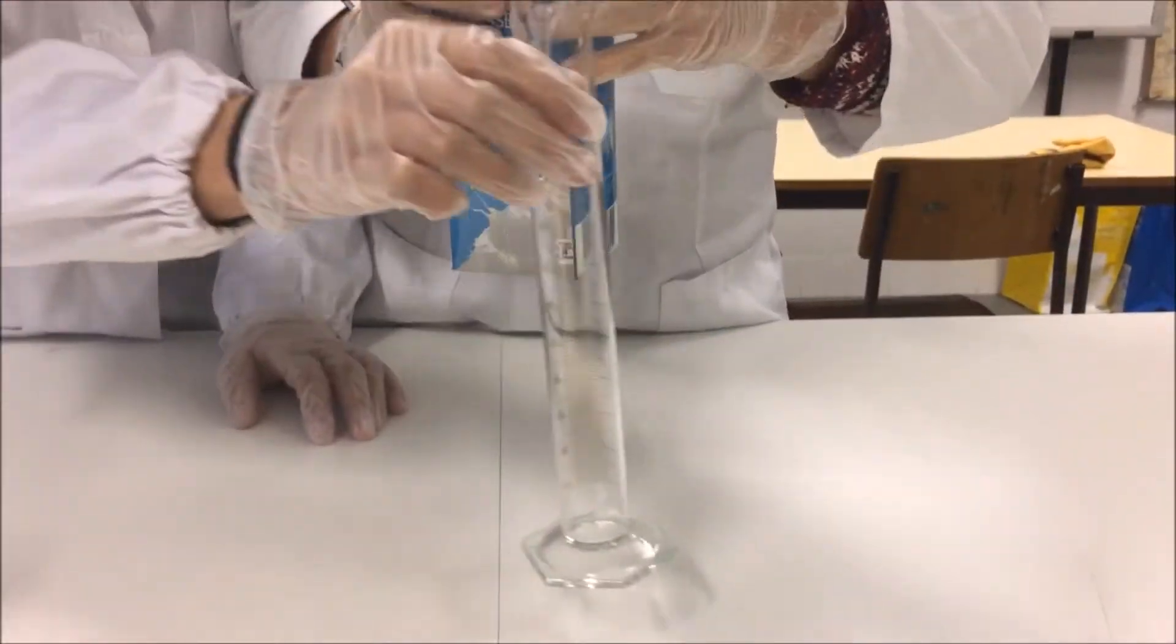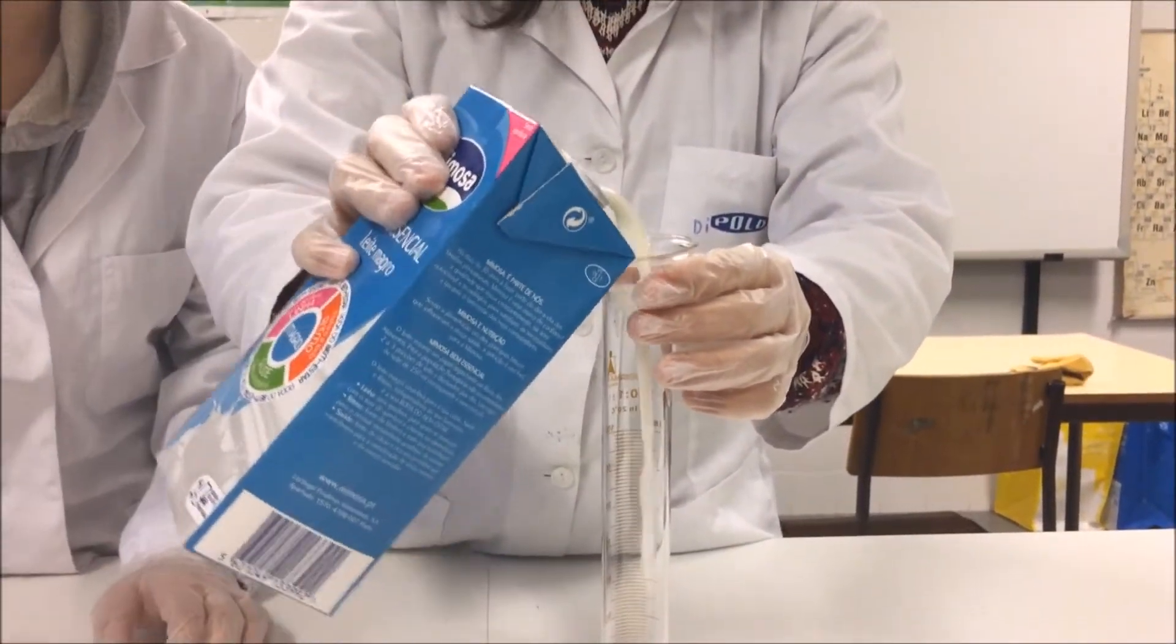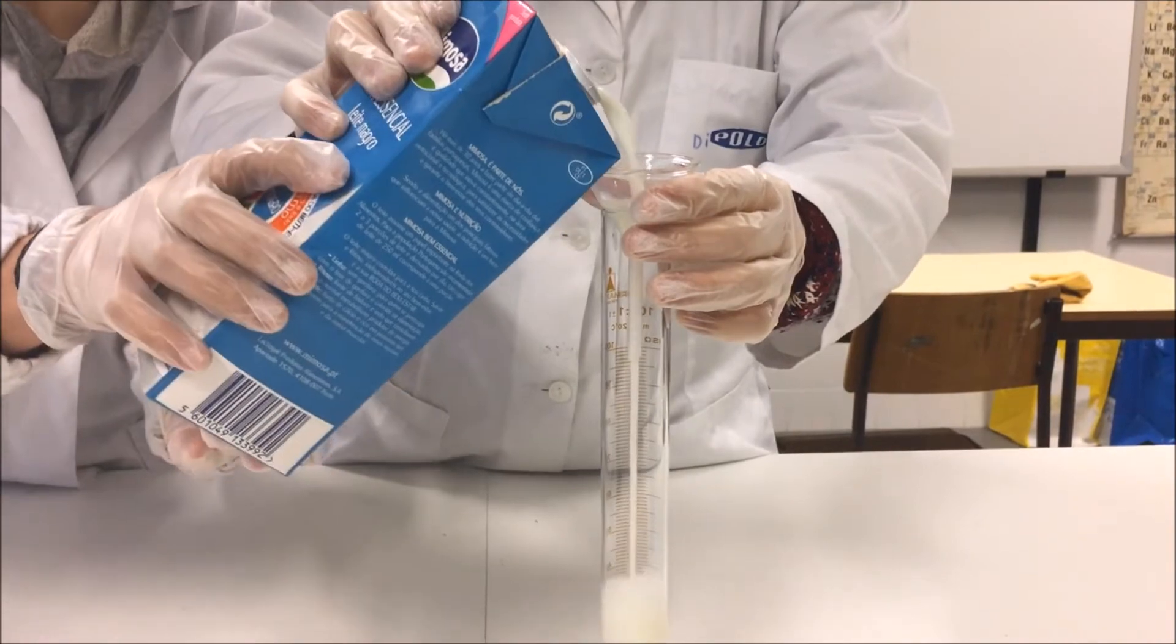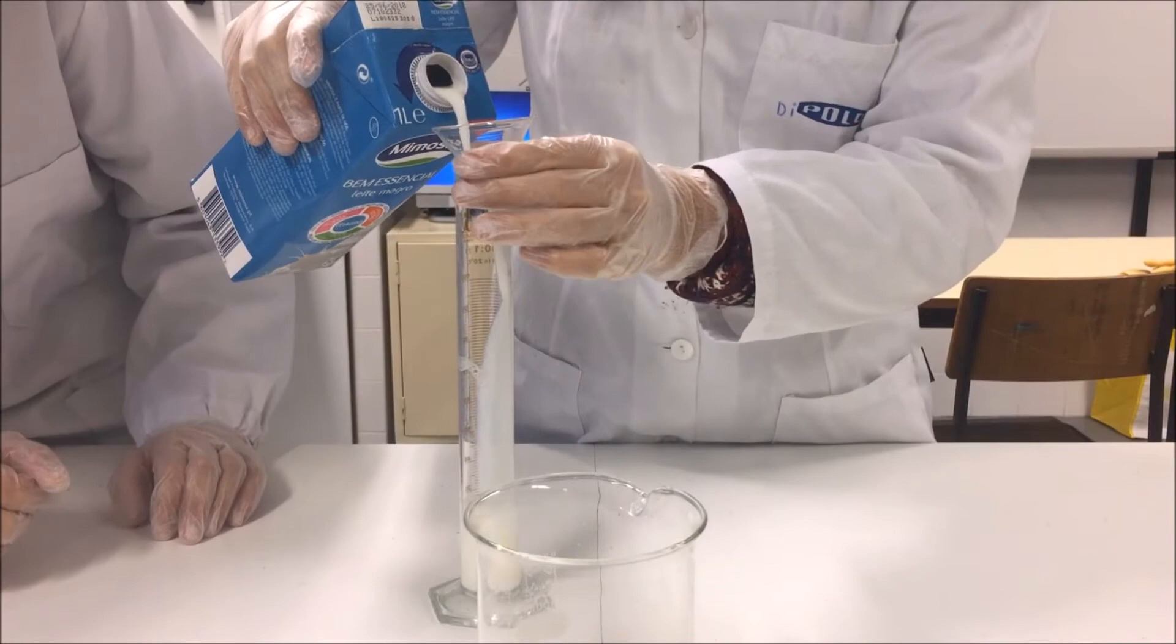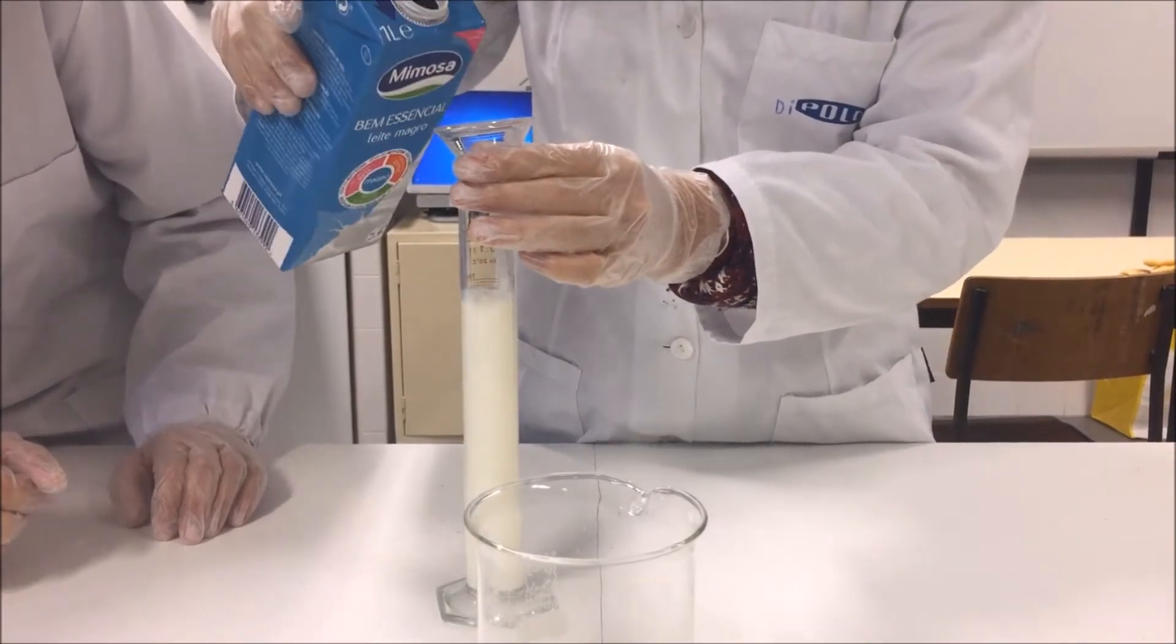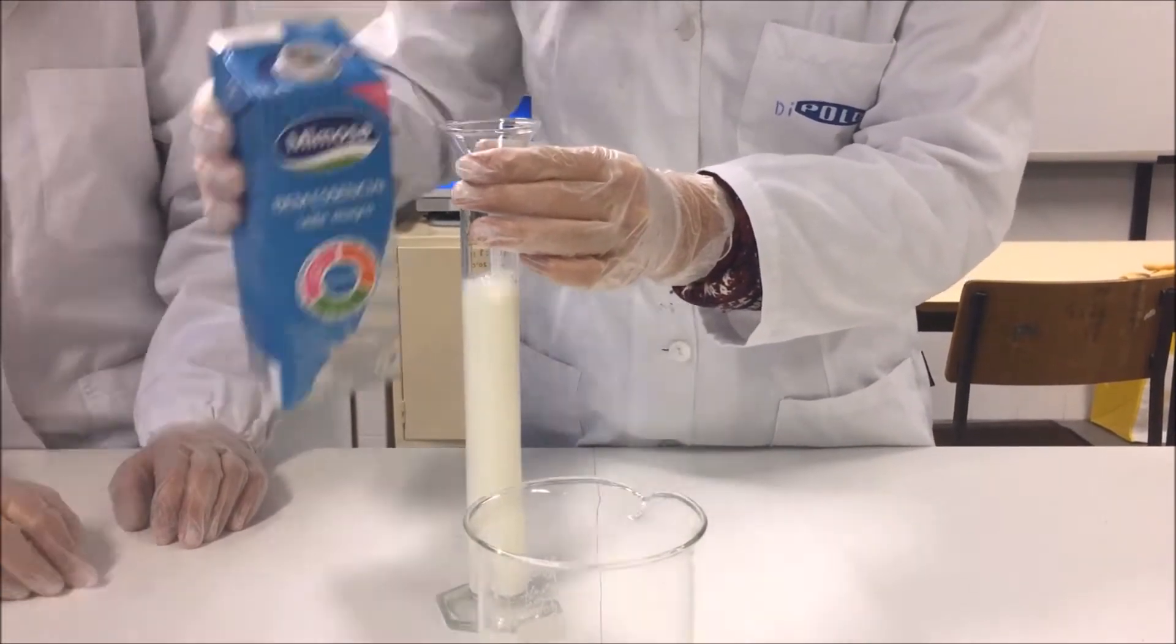The first thing to do is to measure half a liter of milk into the beaker of 600 milliliters with the help of a 100 milliliter graduated cylinder and a glass funnel. As the volume of milk required exceeds the capacity of the graduated cylinder, this step must be repeated five times.